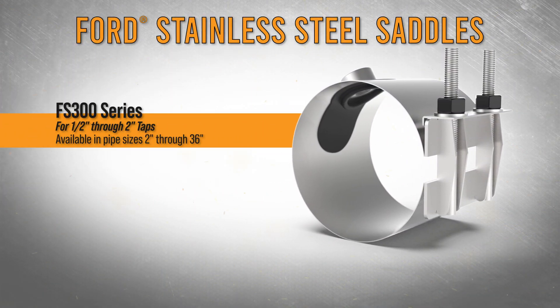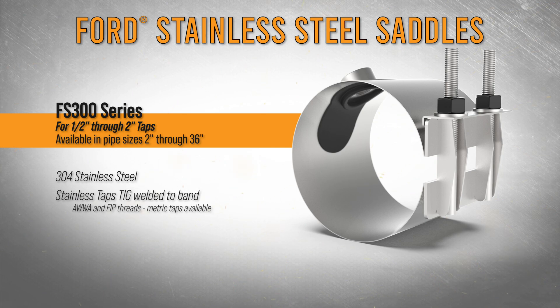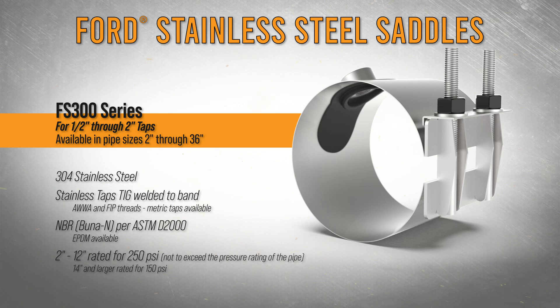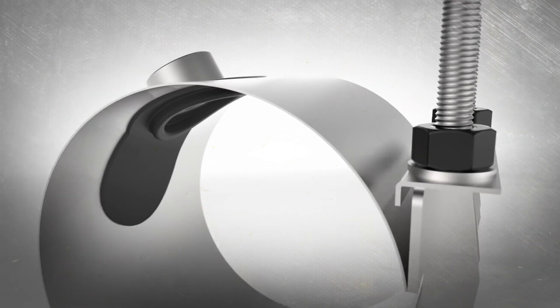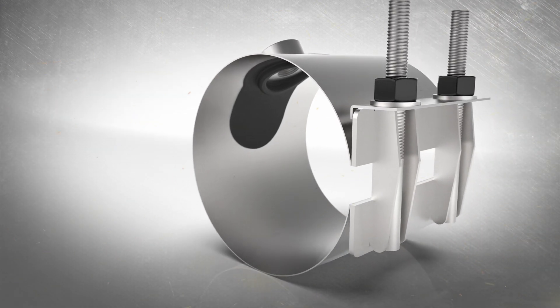The FS300 series is made of 304 stainless steel. Stainless taps are TIG welded to the band. BUNA-N or EPDM gaskets perform at a rated working pressure of up to 250 psi. Each saddle is fully passivated to withstand extreme conditions over a long period of time.